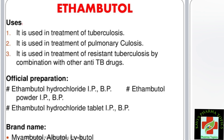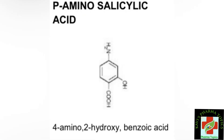Official preparations of ethambutol: ethambutol hydrochloride powder under Indian Pharmacopoeia and British Pharmacopoeia, and ethambutol hydrochloride tablet form. Brand names include Myambutol, Albutal, and Lybutal.